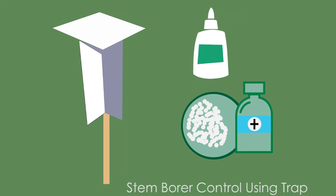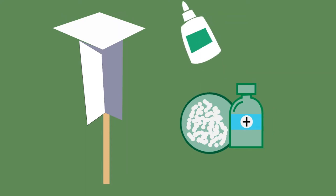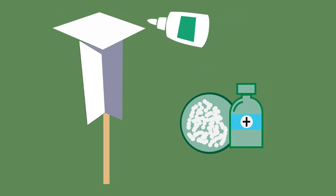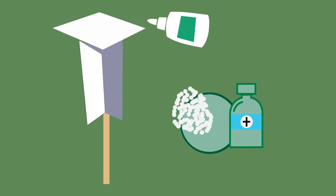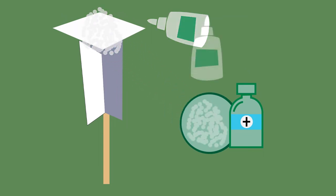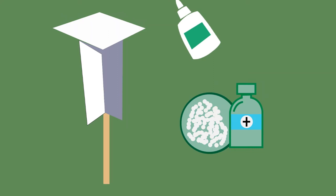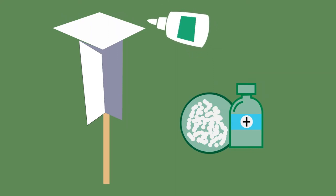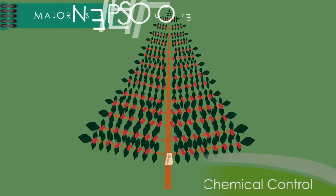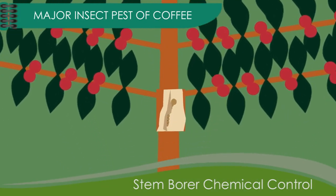Stem borer control methods: number one, stem borer trap. A stem borer trap was developed in India. Use a container or box smeared with glue with a bottle of stem borer attractant or pheromones. Make sure to reapply glue regularly and refill the bottle, especially during the flight period of the insect.